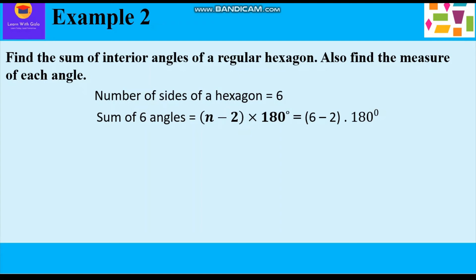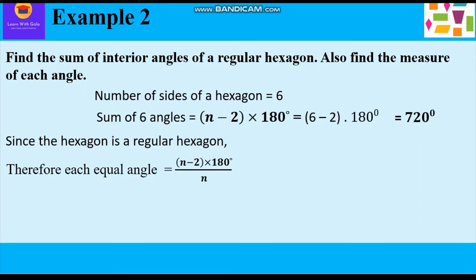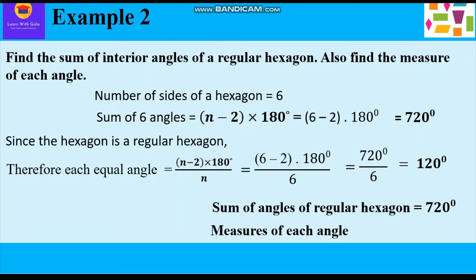Putting in the value: 6 minus 2 times 180 degrees equals 720 degrees. Since this is a regular hexagon, each angle is found by the formula (N minus 2) times 180 degrees divided by N. This gives 6 minus 2 times 180 divided by 6, which equals 720 divided by 6, which equals 120 degrees. So the sum of angles of a regular hexagon is 720 degrees and each angle measures 120 degrees.